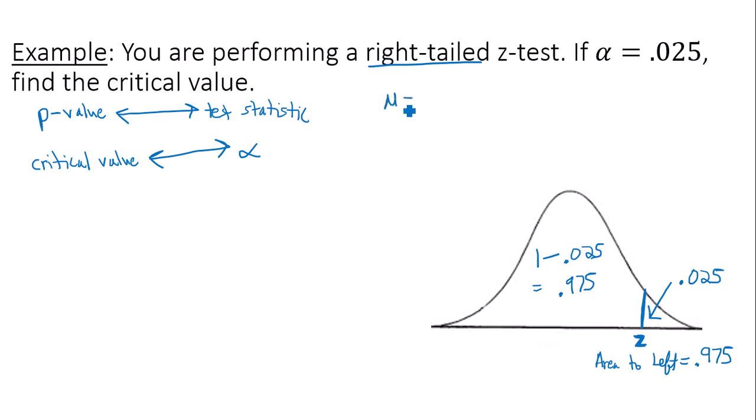In Google Sheets, you know that your mean is going to be 0, standard deviation is 1, because you're dealing with z, the standard normal distribution. And you know area to the left is equal to 0.975. So let's go to Google Sheets and find this critical value.